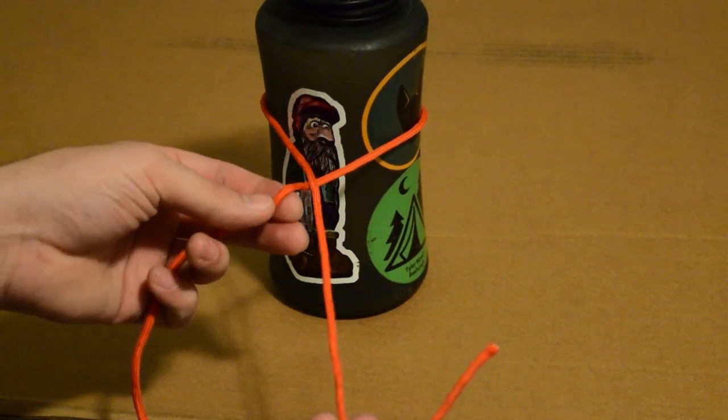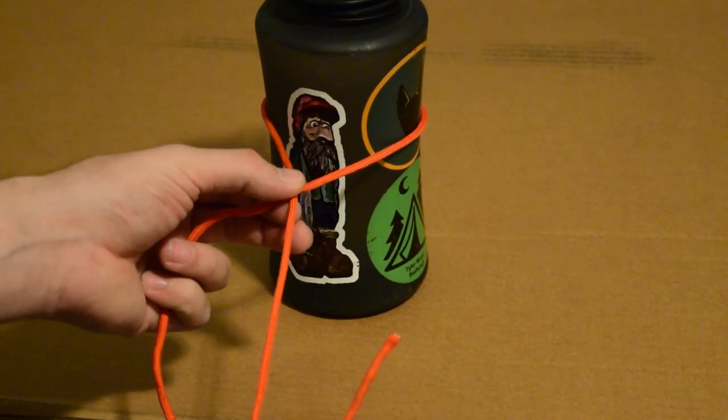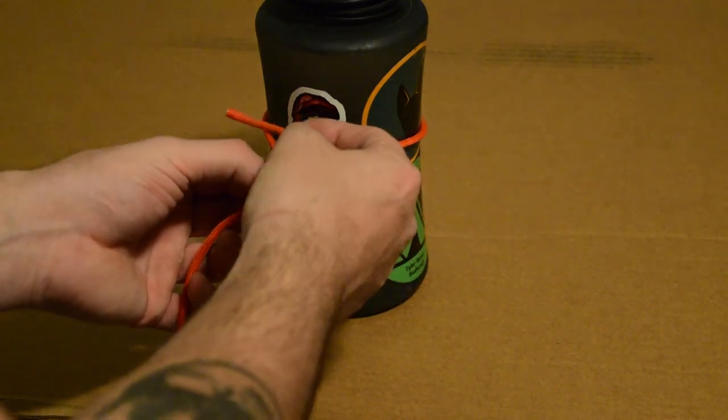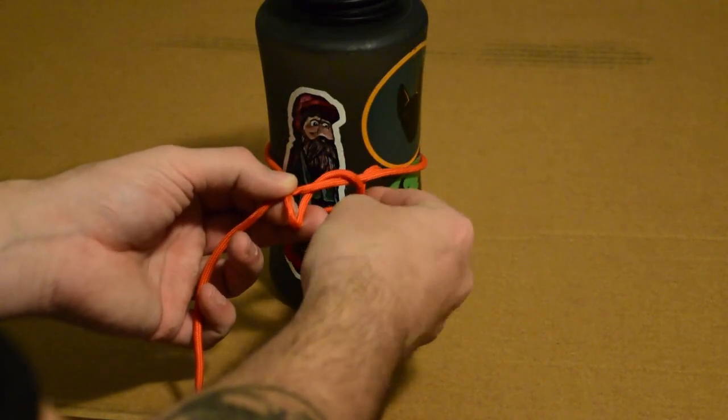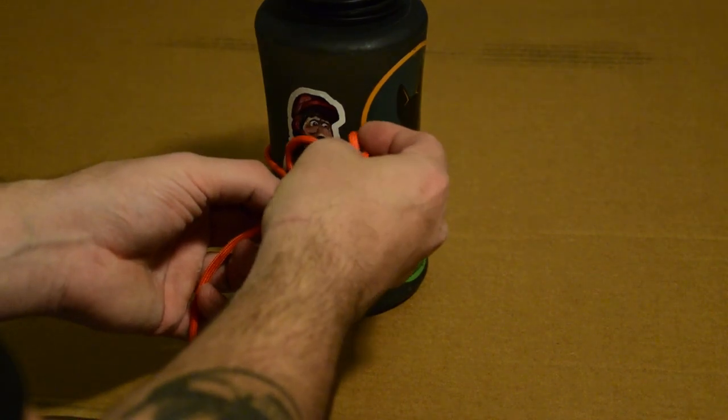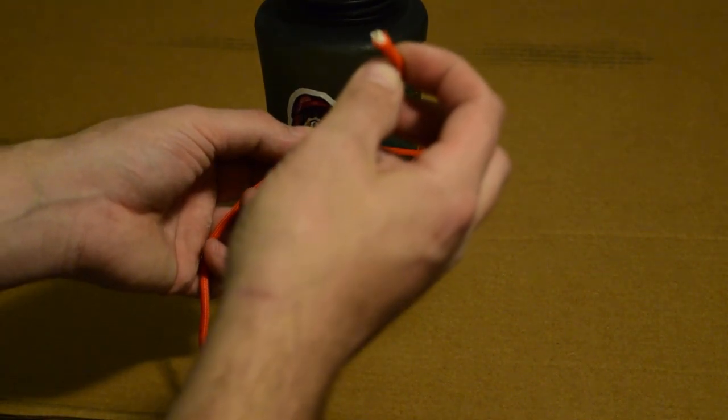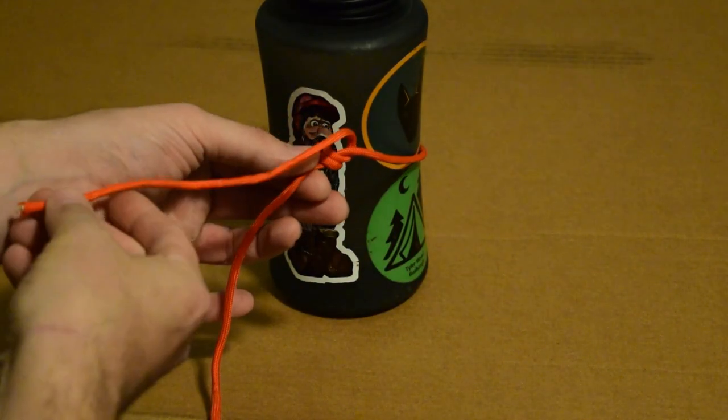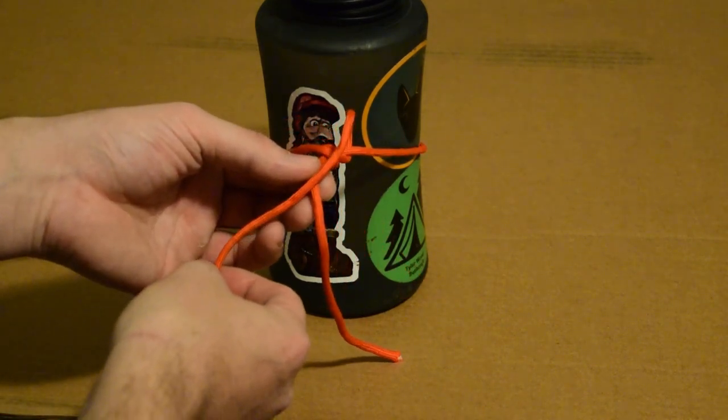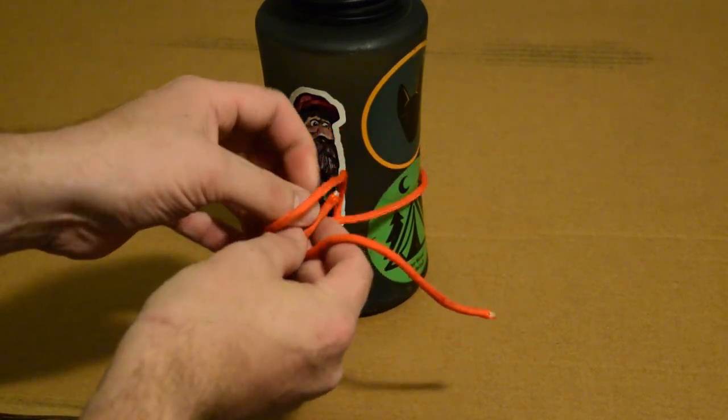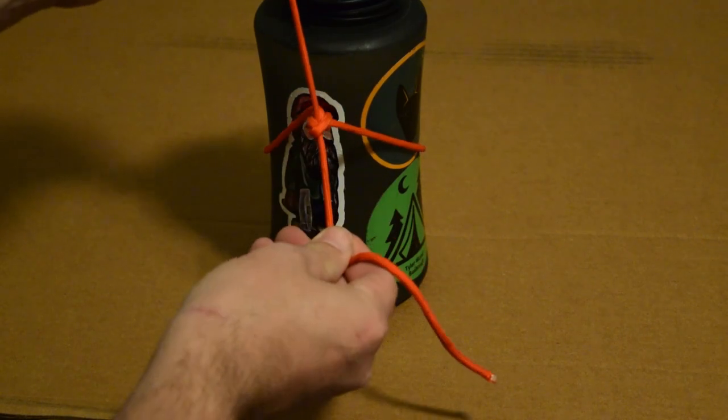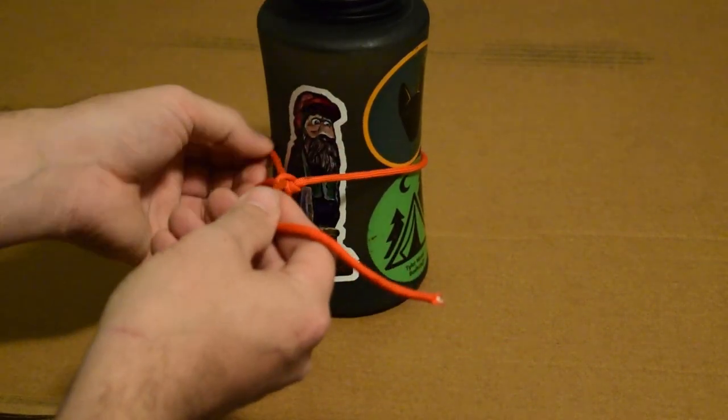We're going to run that right on through, up and over, and we're going to do that again just like that. And then we're going to run it over on top of the other one and run that through. So then right here we have our knot.